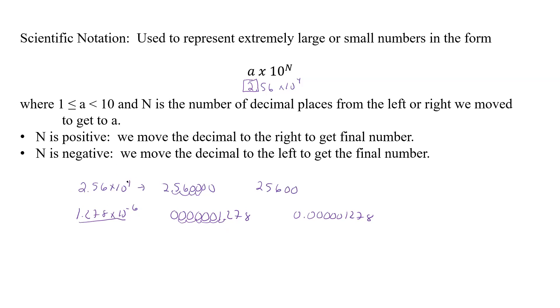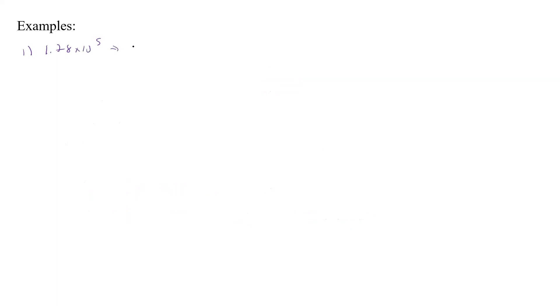The bigger the exponent — like 4 or negative 6 — the more places we have in front of our number or the more zeros on the back end, depending on positive or negative. For example, 1.78 times 10 to the fifth: we move right five spaces — 1, 2, 3, 4, 5 — so our actual number is 178,000.